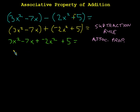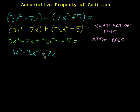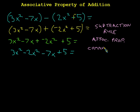Now I'll rearrange things using the commutative property: 3x squared minus 2x squared, then the minus 7x, then the plus 5. Note that the 7x has no x term to combine with, but negative 2x squared and 3x squared can be combined together. Let's make note that we used the commutative property to move everything around.